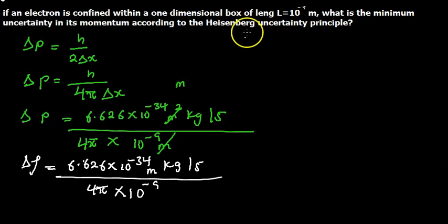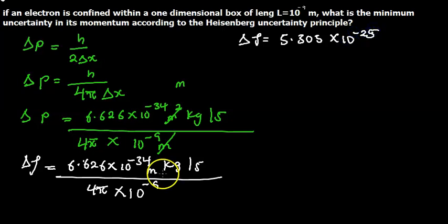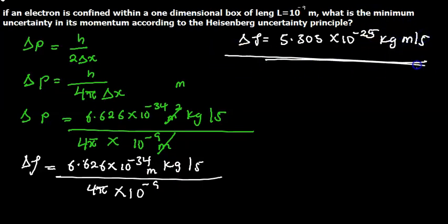If we divide both sides, we find dp is simply going to be 5.305 × 10⁻²⁵. Bringing back our unit, which is kilogram meter per second, the minimum uncertainty in the momentum of an electron is 5.305 × 10⁻²⁵ kilogram meter per second. This problem illustrates how the Heisenberg uncertainty principle can be applied to calculating the uncertainty in position and momentum of an electron in different scenarios.